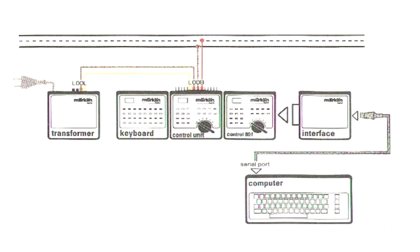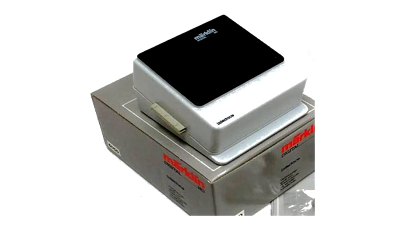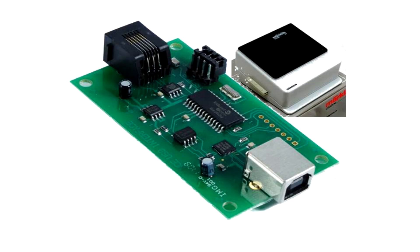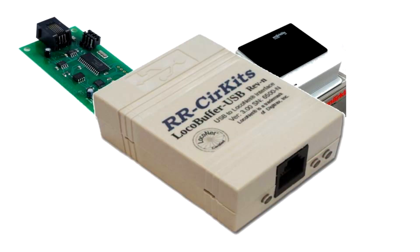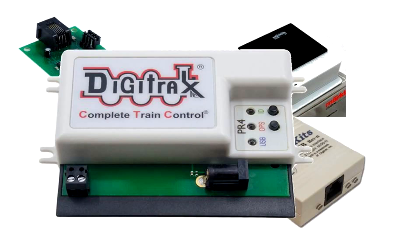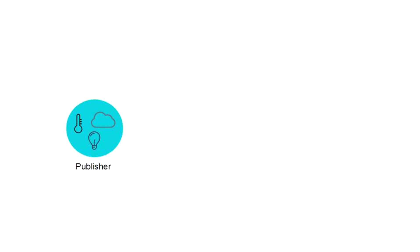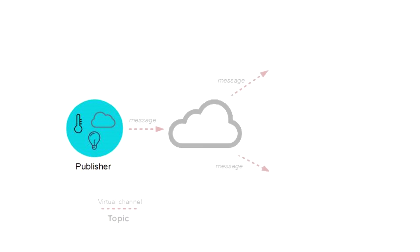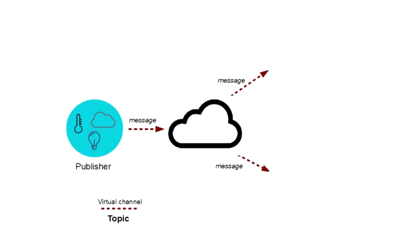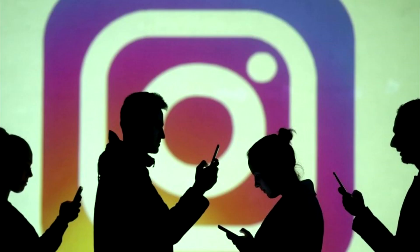Ever since digital command control systems became available, manufacturers provided a way to hook them up with a computer. And over the last 40 years, the fundamental structure of this connection has always been a point-to-point connection to a single computer. Compared to technologies used in IoT, the Internet of Things, this point-to-point connection is like the stone age of computer control.